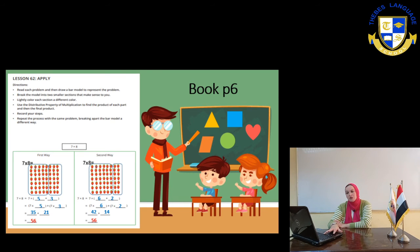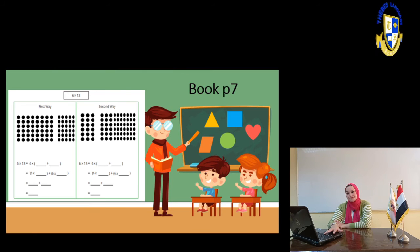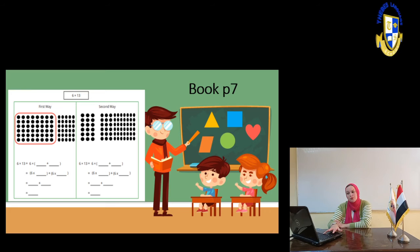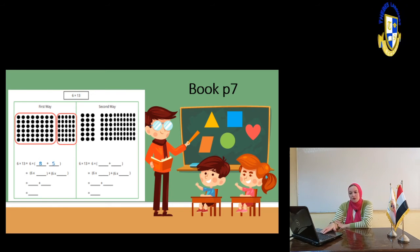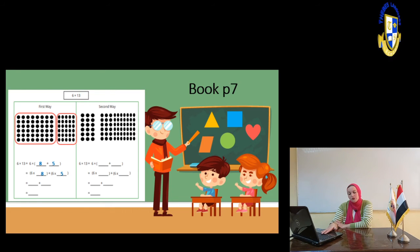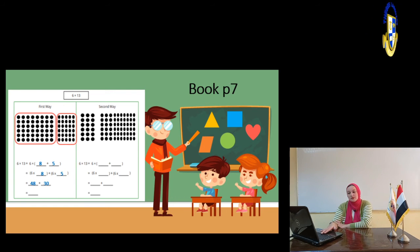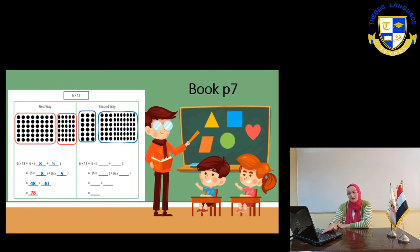Now we have 6 times 13. We have one array. We are going to split the 13 into two smaller arrays: 8 and 5. So we are going to make 6 times 8 plus 6 times 5, which is 48 plus 30. After adding them together, the result will be 78. Or we can split 13 a second way, into 3 plus 10. So it will be 6 times 3 plus 6 times 10, which is 18 plus 60, equaling 78.